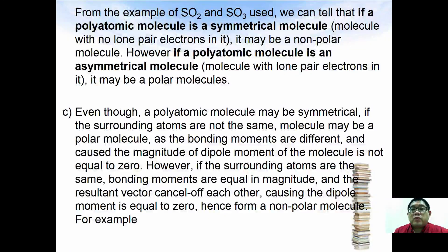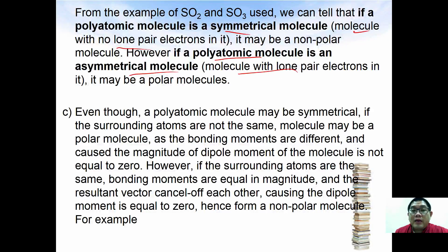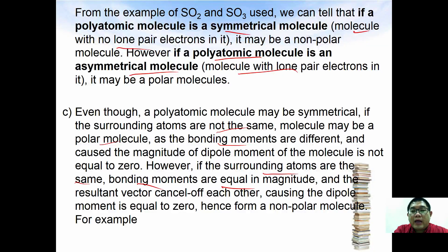From the SO₂ and SO₃ examples, we can conclude: if a polyatomic molecule is symmetrical — meaning it has no lone pair electrons — it may be non-polar. If a polyatomic molecule is asymmetrical — typically containing lone pair electrons that influence repulsion — it is likely polar. Even if a molecule is symmetrical, if the surrounding atoms are different, it may still be polar because the bonding moments differ. If surrounding atoms are the same, bond moments cancel and the overall dipole moment equals zero.